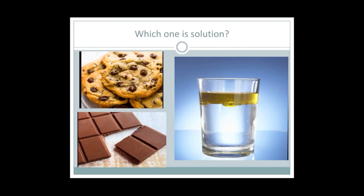Chocolate is the right answer because all of these components are uniformly distributed. The other example of water and oil can be easily identified and separated — so it is a heterogeneous mixture, not a solution.